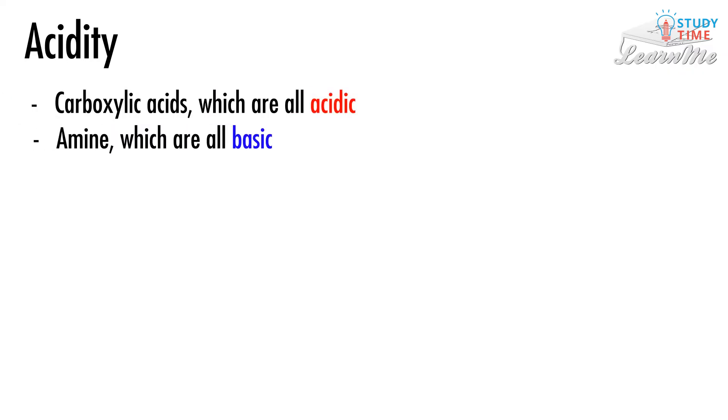The final thing that we've got to say about the properties of organic molecules is about acidity, which you'll be painfully familiar with if you've looked at the chemical reactivity topic. Anyway, almost all the organic molecules we've looked at in this standard are neutral, which means that they have no particular acidity at all. This sounds dull, but it's actually a good thing. There are, however, two different non-neutral substances you need to know about. Carboxylic acids, which are all acidic, obviously, and amines, which are all basic or alkaline.